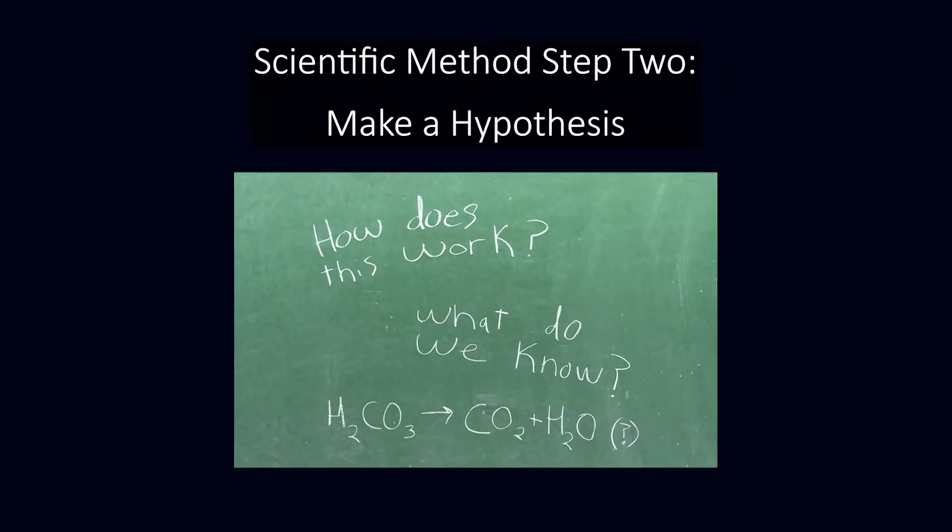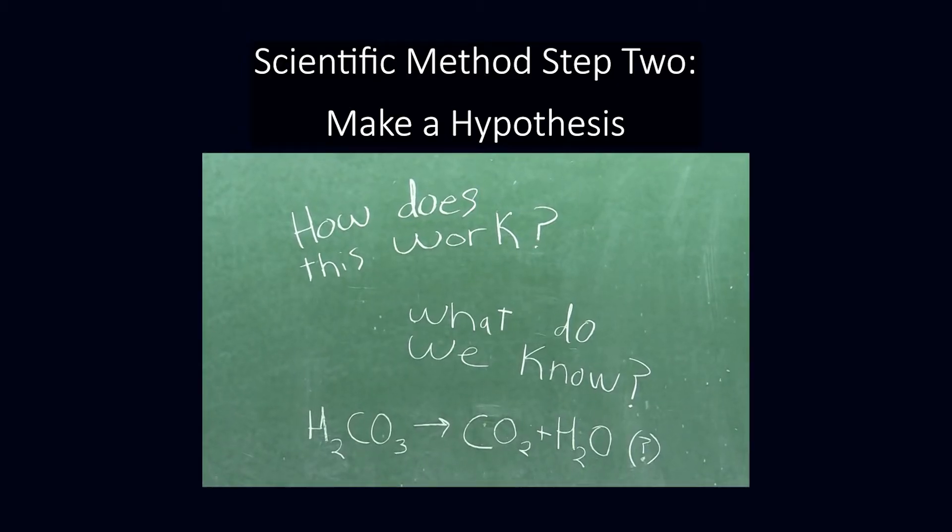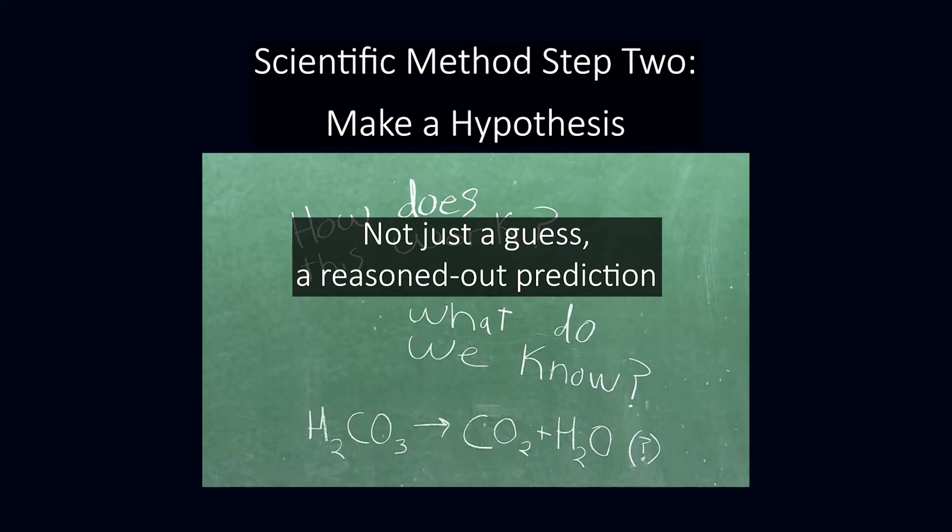Step two is to make a hypothesis, or a postulate if you will, that explains how your phenomenon works. A real hypothesis is not simply a guess. It's a prediction based on what's already known about your phenomenon. So in order to make one, you have to learn as much as you can about whatever it is you're studying.